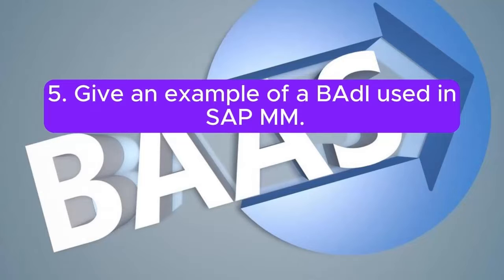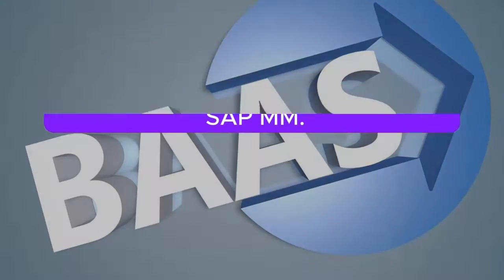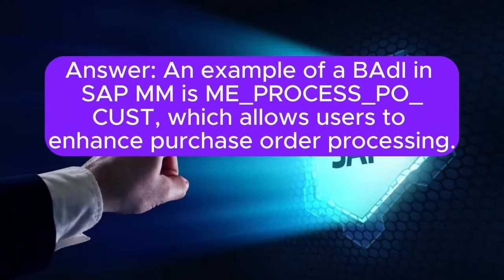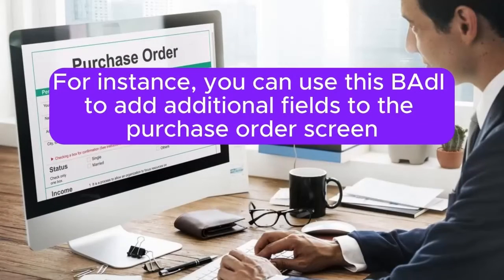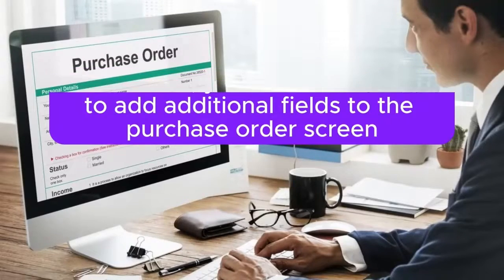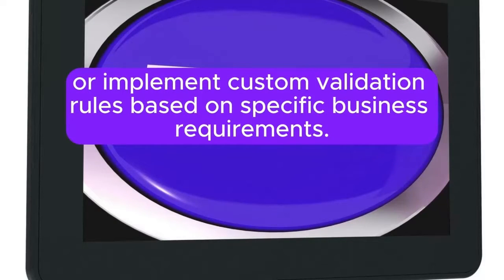Give an example of a BAdi used in SAP MM. An example of a BAdi in SAP MM is ME_PROCESS_PO_CUST, which allows users to enhance purchase order processing. For instance, you can use this BAdi to add additional fields to the purchase order screen or implement custom validation rules based on specific business requirements.